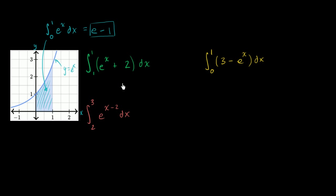So you might first say, okay, e to the x plus two — you might be tempted to decompose this into the definite integral of e to the x dx, plus the definite integral from one to one of e to the x dx, plus the definite integral from one to one of two dx.